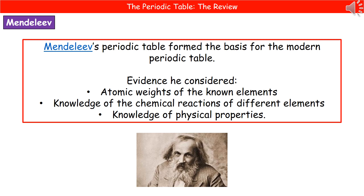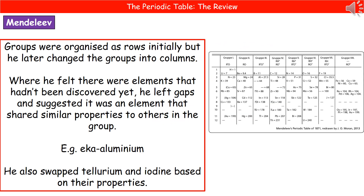The way that he developed his Periodic Table was by considering a range of evidence. The evidence he considered, first of all, were the atomic weights of the known elements in his time. He also had knowledge of the chemical reactions of different elements and knowledge of their physical properties. So what he actually did was arrange all of the elements known at the time in order of their increasing atomic weight.